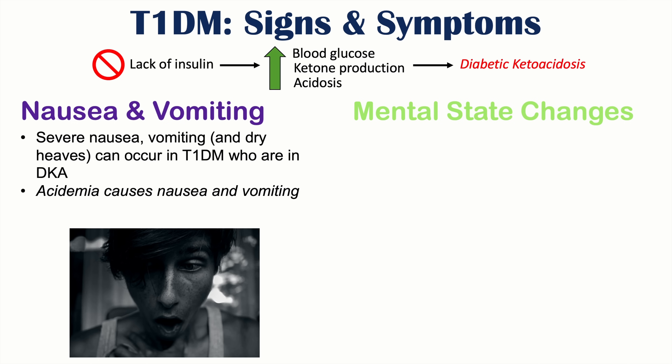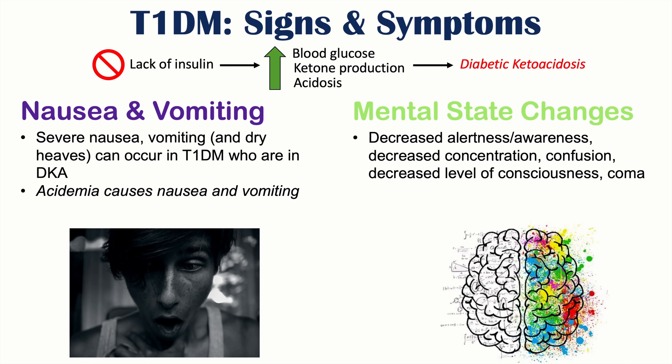Another very important finding in diabetic ketoacidosis is mental state changes. Patients can have decreased alertness, decreased concentration, confusion, decreased level of consciousness, and can even go into a coma. In children and adolescents, this may occur due to cerebral edema — the brain swelling due to electrolyte changes — which is a very critical finding to recognize.